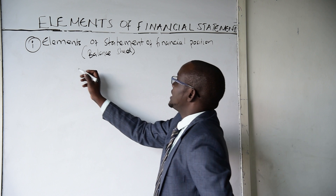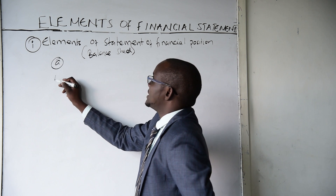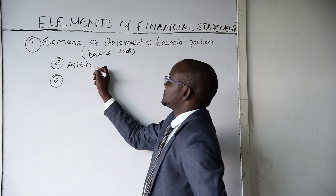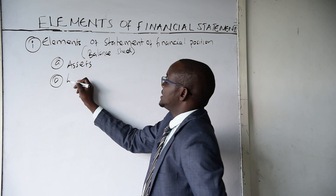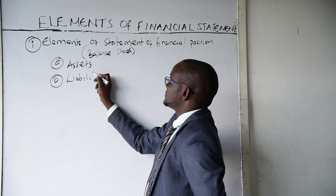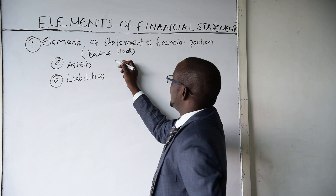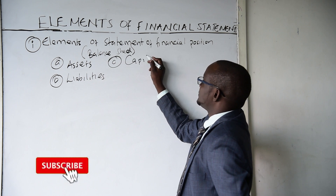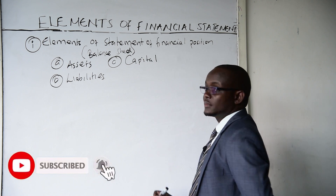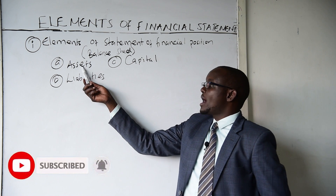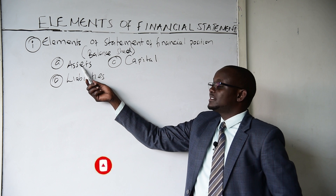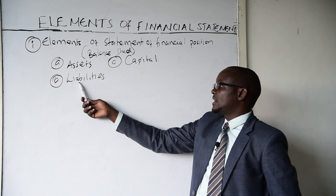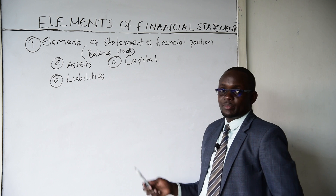In a balance sheet we have three main elements. The first one is assets, the second one is liabilities, and the third one is capital. We shall discuss what are assets, what are liabilities, and what is capital.